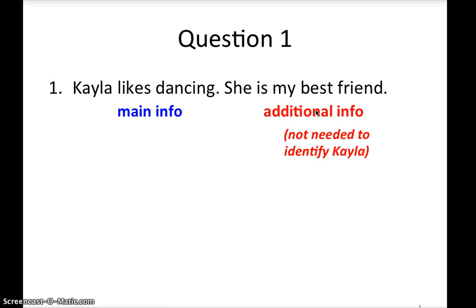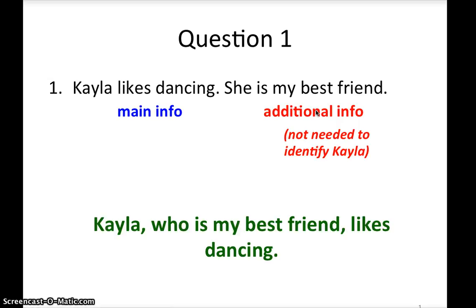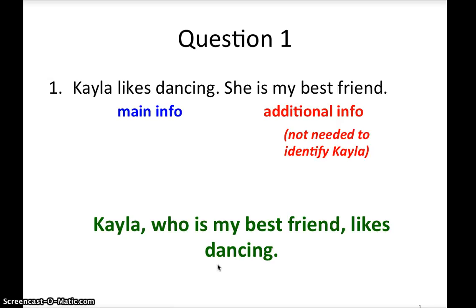For question one, do you think commas are needed? I'm going to put commas because the part about Kayla being my best friend is really additional and extra — not needed to identify her. So that's why I have a comma, and the main idea here is 'Kayla likes dancing.' Could you write this answer down in the worksheet? If you need more time to write, just press the pause button and continue watching when you are done.